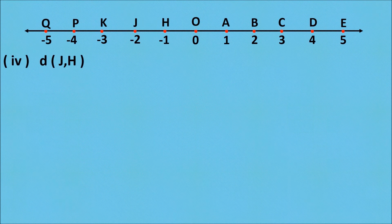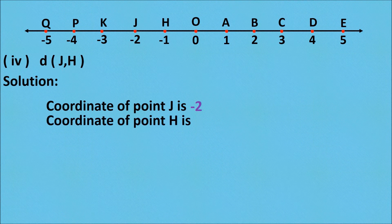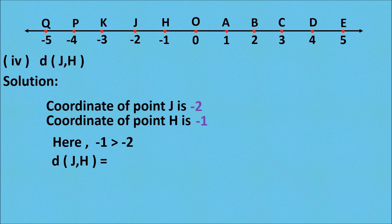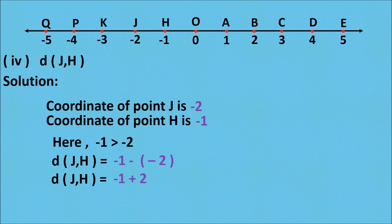Next question: find the distance between point J and H. The coordinate of point J is minus 2 and the coordinate of point H is minus 1. Since minus 1 is greater than minus 2, distance JH equals greater coordinate minus smaller coordinate, that is minus 1 minus (minus 2). Solving the bracket, minus into minus becomes plus, so minus 1 plus 2. Therefore, distance JH equals 1.